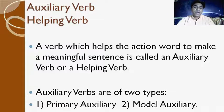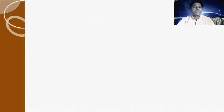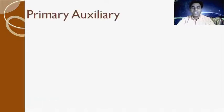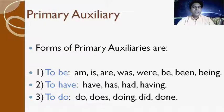Let's see the primary auxiliary verbs. The forms of primary auxiliary are the 'to be' forms: is, are, was, were, been, being — these are the 'to be' forms. The second form is the 'to have' form: have.